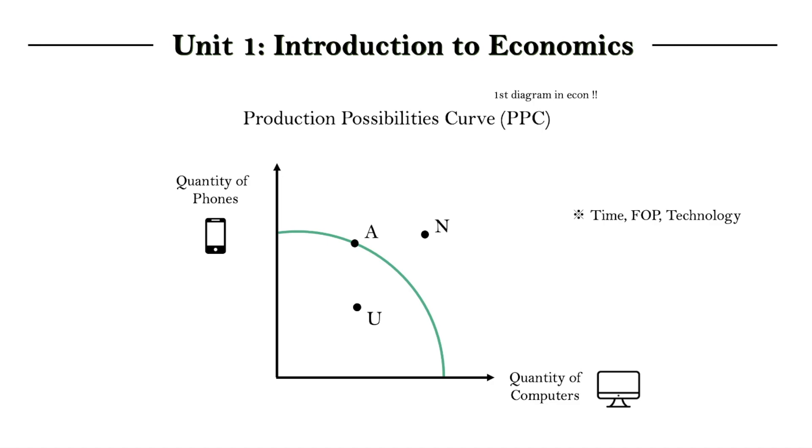So starting at point U, we are experiencing unemployment of resources or inefficiency. Let's say that there are people who could work but are unemployed or there's a supply of steel that we have but just aren't using. Now in this case, if we are able to make the people who are unemployed working to make phones and computers and we start to use steel that was previously unused, we could move up to a point on the curve and produce more